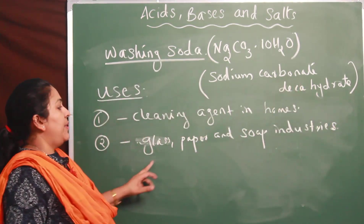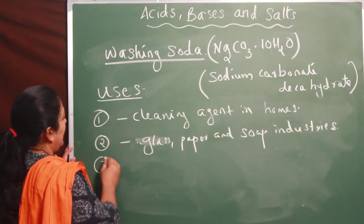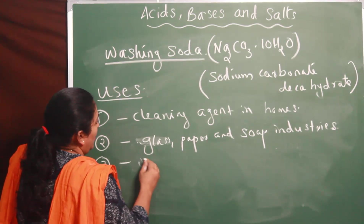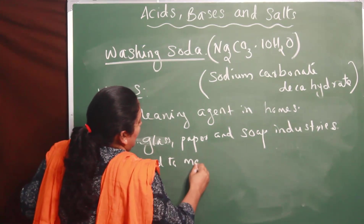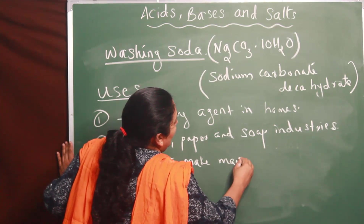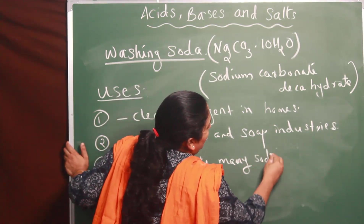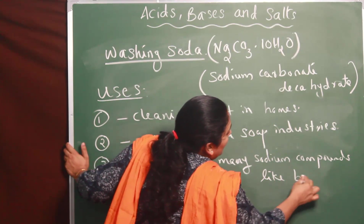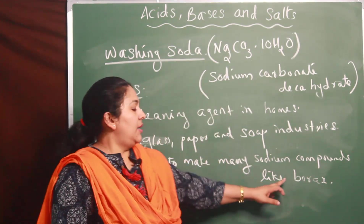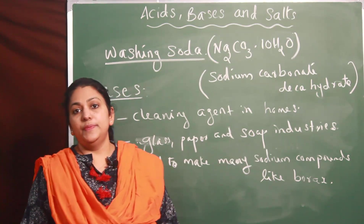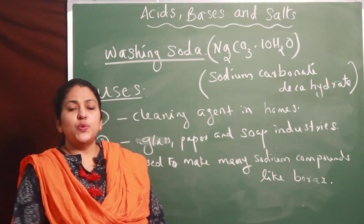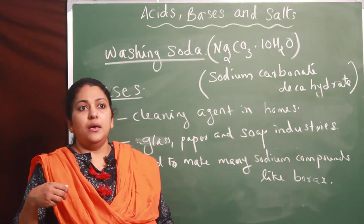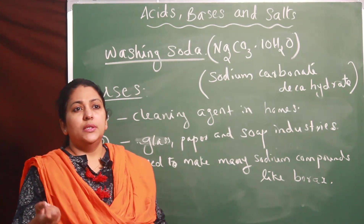The third use is that washing soda is used to make many sodium compounds. One example is borax - sodium tetraborax - which is used for making pesticides, for cleaning purposes, and as a fungicide, among many other uses.